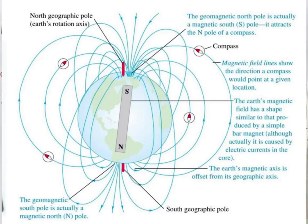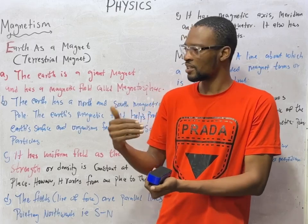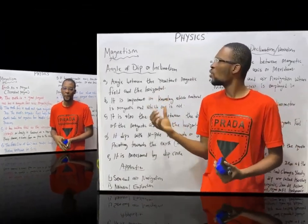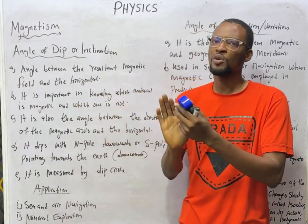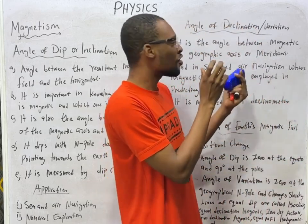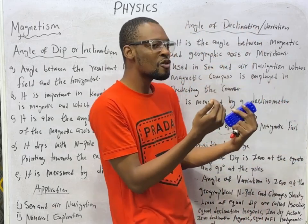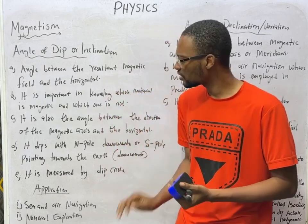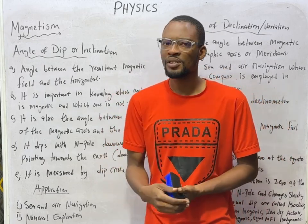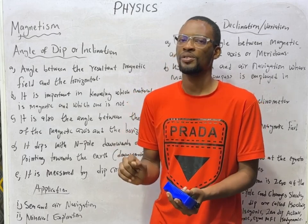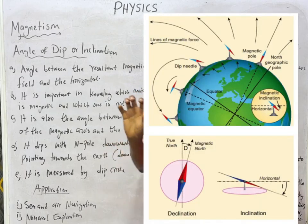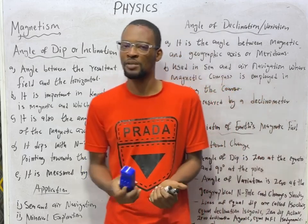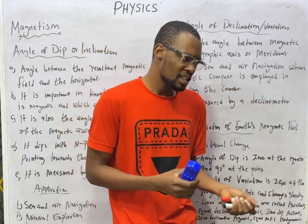The magnetic equator is the perpendicular bisector of the magnetic axis. The angle of dip, also called angle of inclination, and the angle of declination, also called angle of variation, are important magnetic elements of the earth.